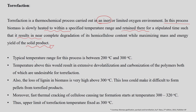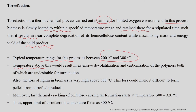In this process the temperature range is between 200 to 300°C. There is a very narrow temperature range for torrefaction because if the temperature goes above this specified limit, it results in extensive devolatilization and carbonization of the polymers. Both these steps are undesirable for the solid product formed. Moreover, the loss of lignin in biomass is also very high if the temperature goes beyond 300°C, making it difficult to form pellets from the torrefaction product.